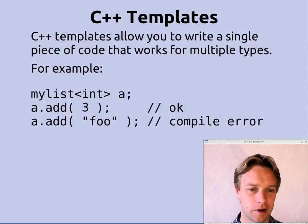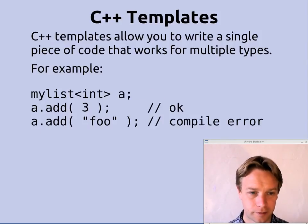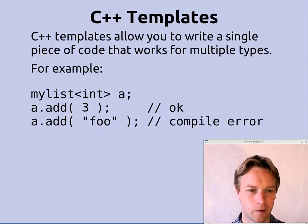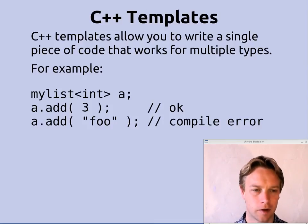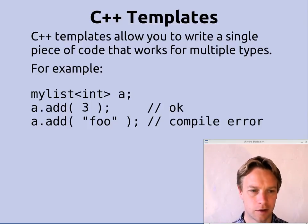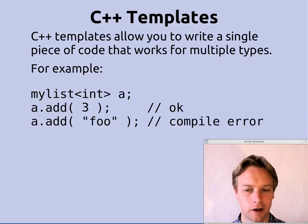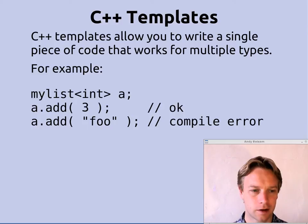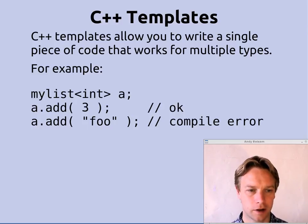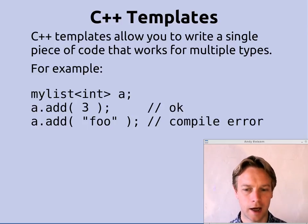So what is a C++ template? A C++ template is something that allows you to write one piece of code that works with multiple types. For example, we have a class here called myList which is actually a class template. The way we make a class out of it is we provide these angle brackets with int. So now we're saying make a list of int and call that list A. In C++ that actually makes a list.